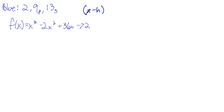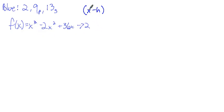A linear factor could have maybe a number in front of x, but we know in this case it won't because we see there's a 1 in front of this polynomial. So if we had linear factors and one of them had a 2 in front of the x, we'd get 2x to the third, but we don't — we just have x to the third. So these factors could be x minus 2, x plus 5, or x plus something if h were a negative number.